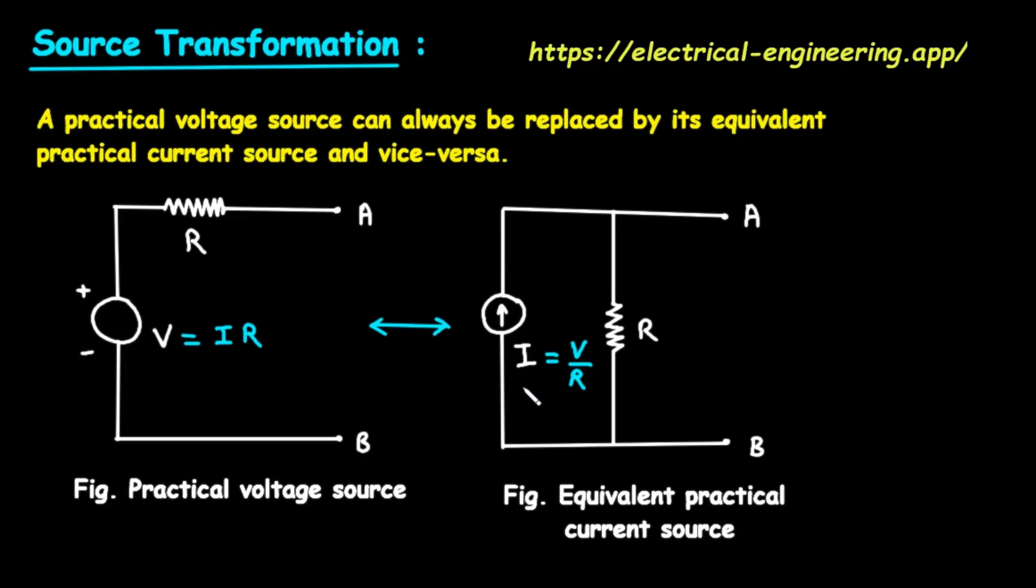By following these simple rules, you can swap between these two equivalent forms. This is incredibly useful for simplifying complex circuits, often allowing you to combine resistors that were previously difficult to deal with, making the overall circuit much easier to solve.